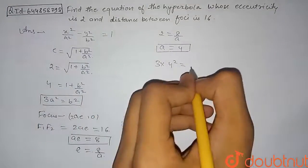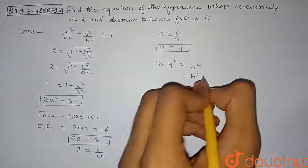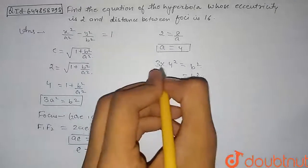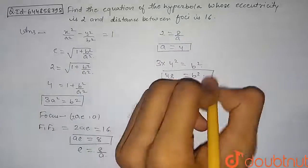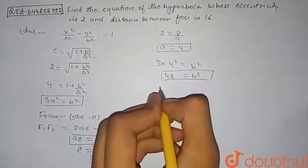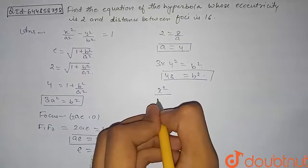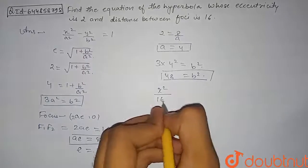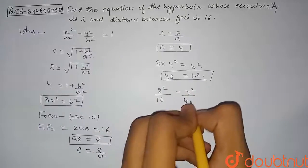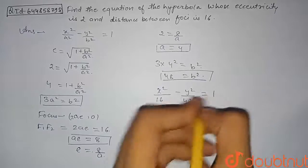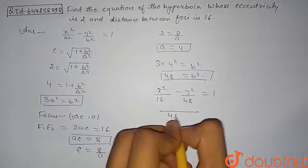Substituting a = 4 into the first relation 3a² = b²: we get 3 × 4² = b², so b² = 3 × 16 = 48. The hyperbola equation is x²/16 − y²/48 = 1.